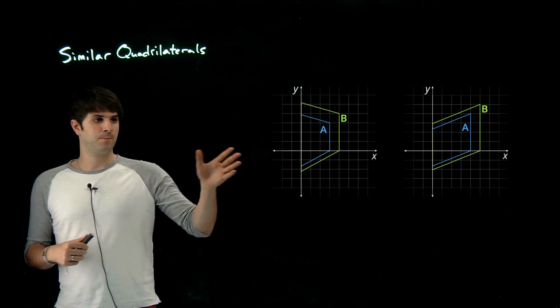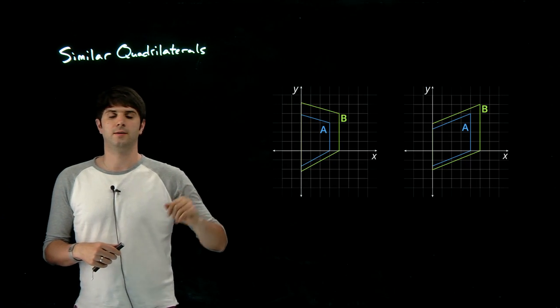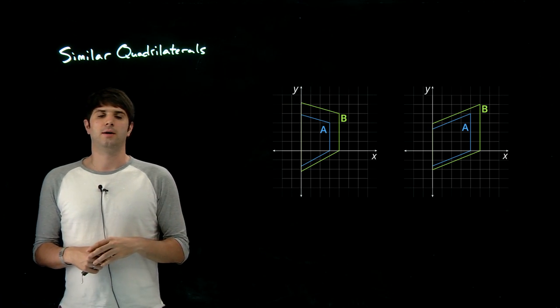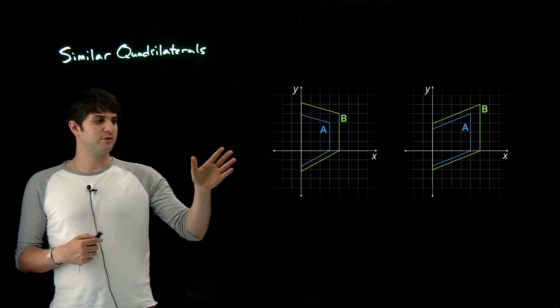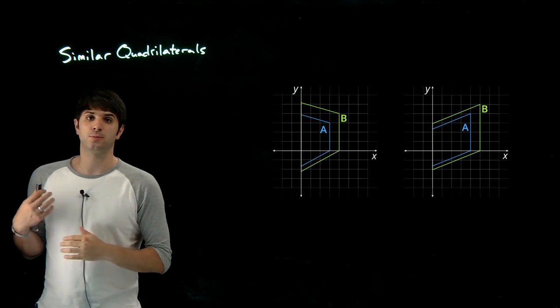Finally, here are two more images, A and B. These will be similar as well because the angles are the same and the side lengths are proportional.